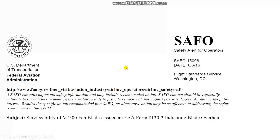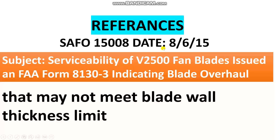Caution for operators: inspect and check the fan blade part number and serial number to verify serviceability. There is a reference document — an FAA form — regarding the serviceability of V2500 fan blades, which was issued due to blade wall thickness concerns. The blades may not meet the overall wall thickness requirement, so operators must check the part number and serial number carefully.